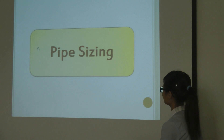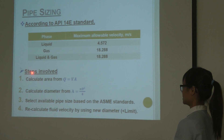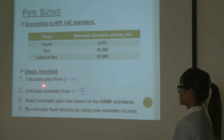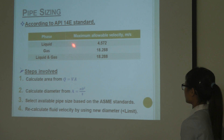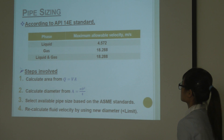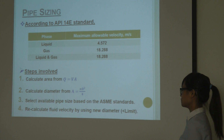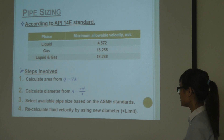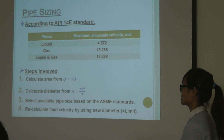Next is the pipe sizing. The steps to calculate pipe size are: first, calculate the cross-sectional area using the flow formula; then determine velocity using the maximum allowable velocity according to API 14E standards. After that, calculate the pipe diameter and select the available pipe size based on ASME data. Then calculate the actual velocity using the new diameter to ensure it is below the maximum allowable velocity.